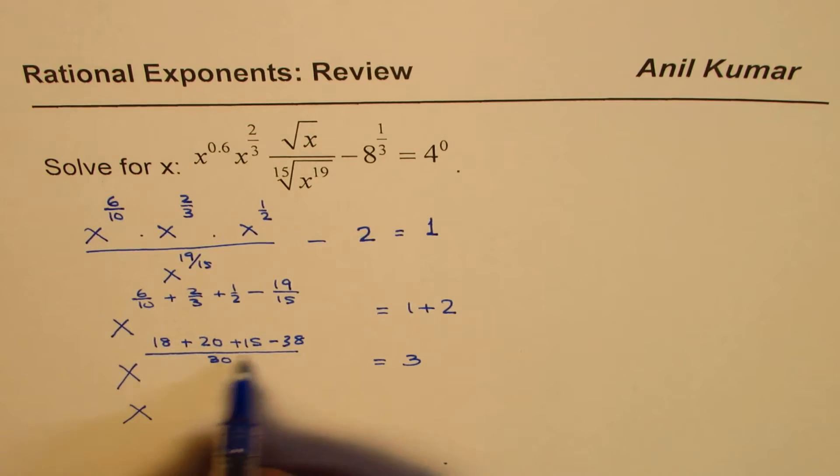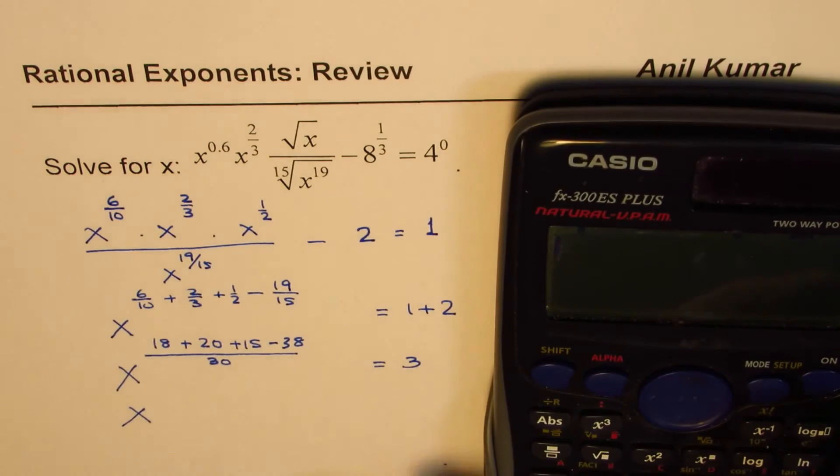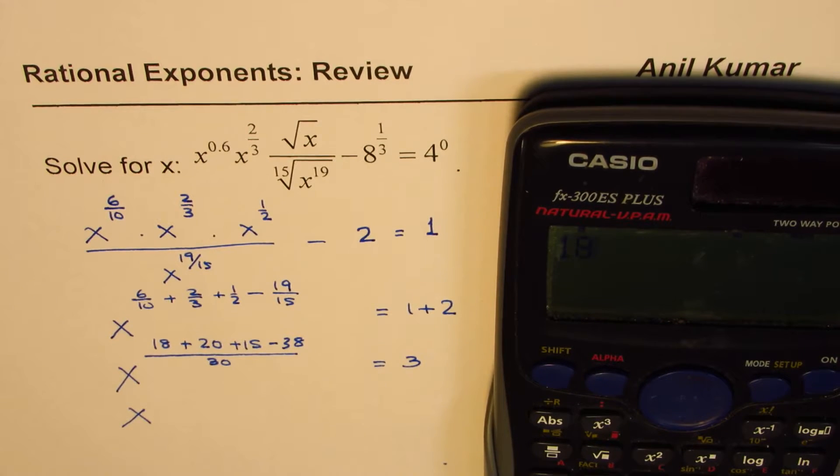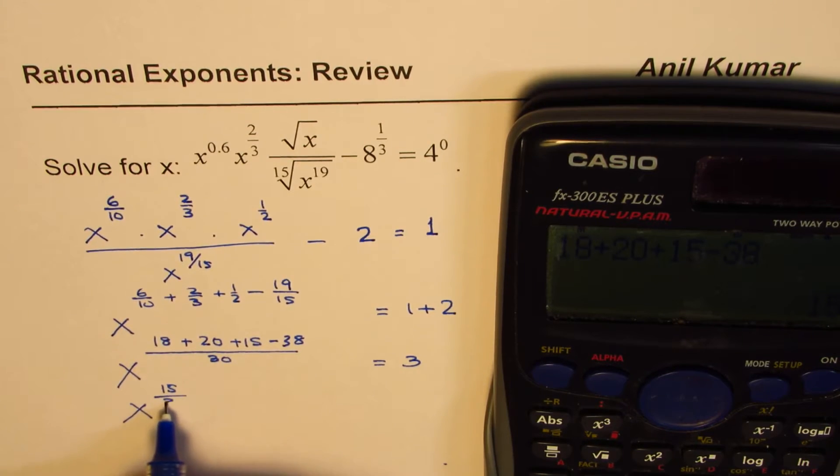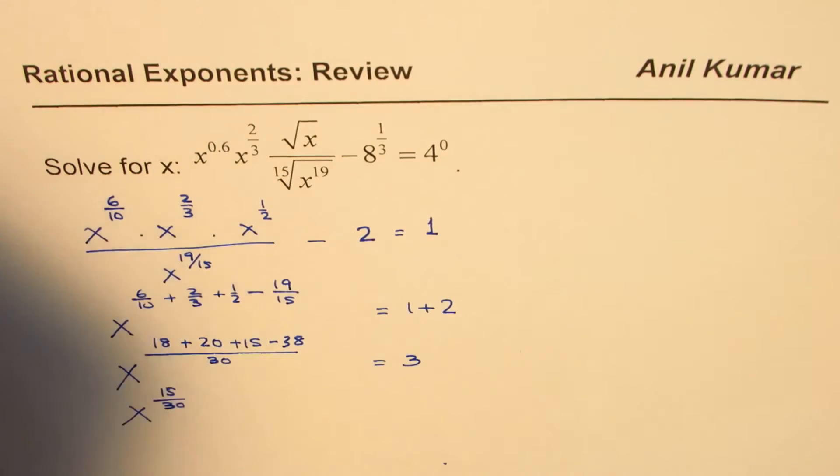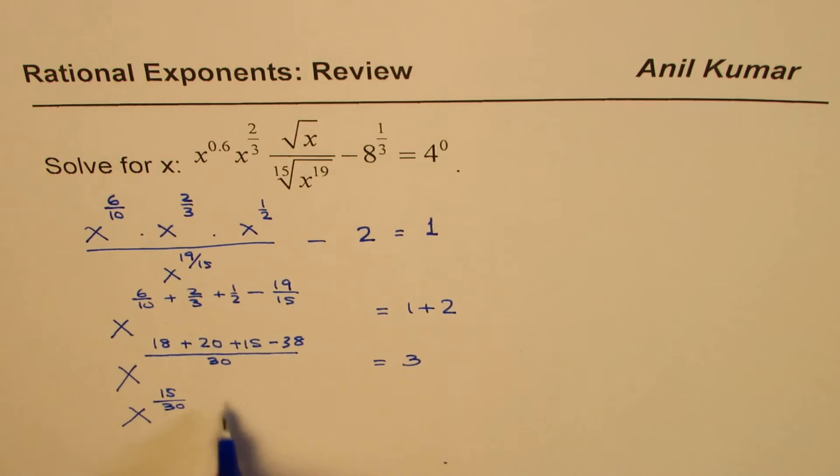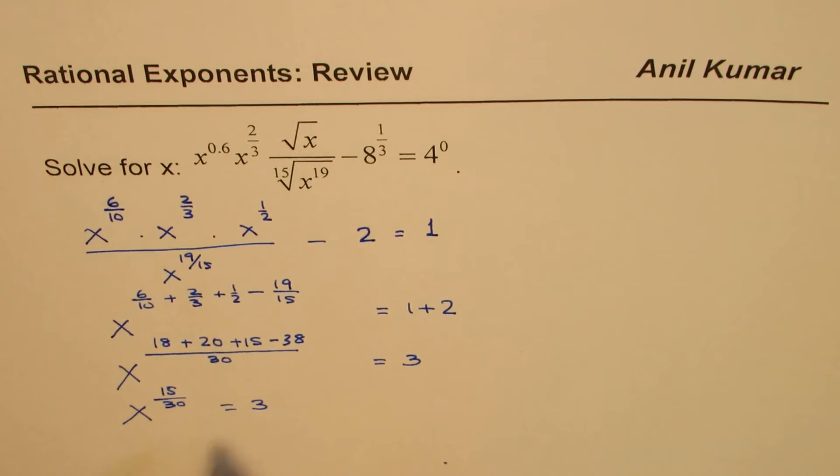Let's add them up: 18 plus 20 plus 15 minus 38 equals 15. So we get 15/30, which simplifies to 1/2 as the exponent, and this equals 3.